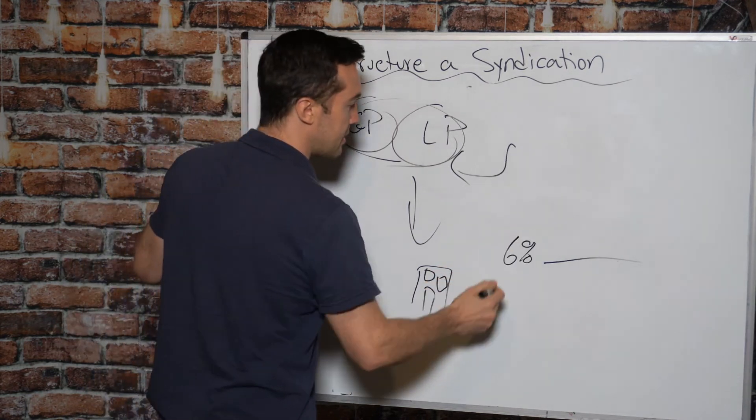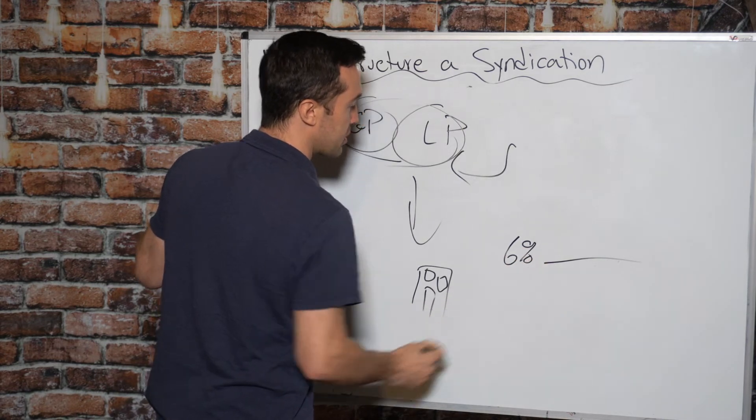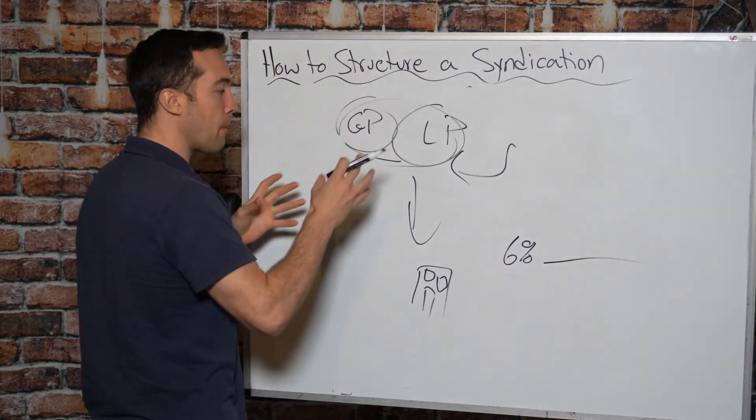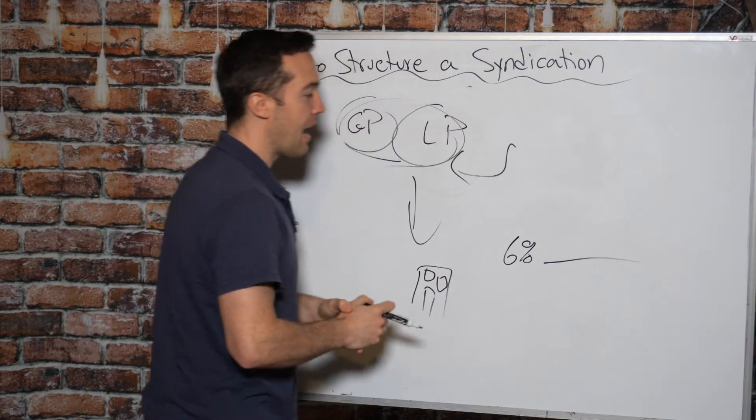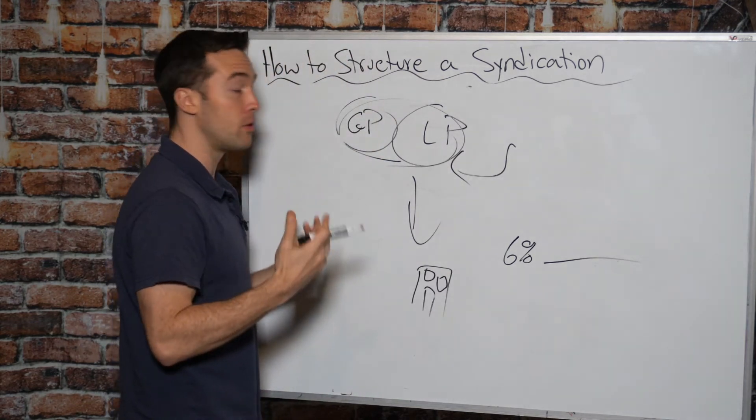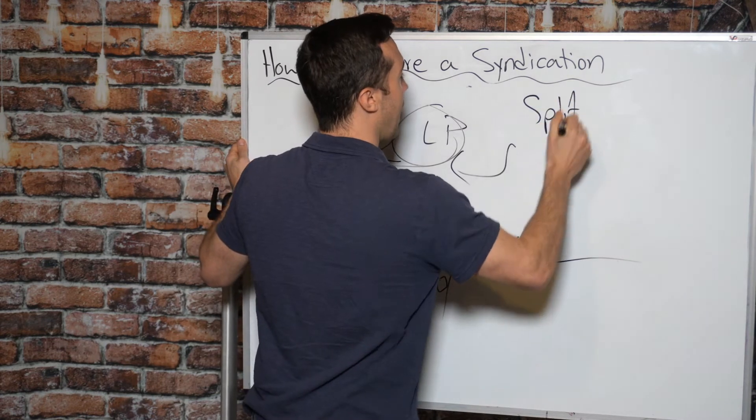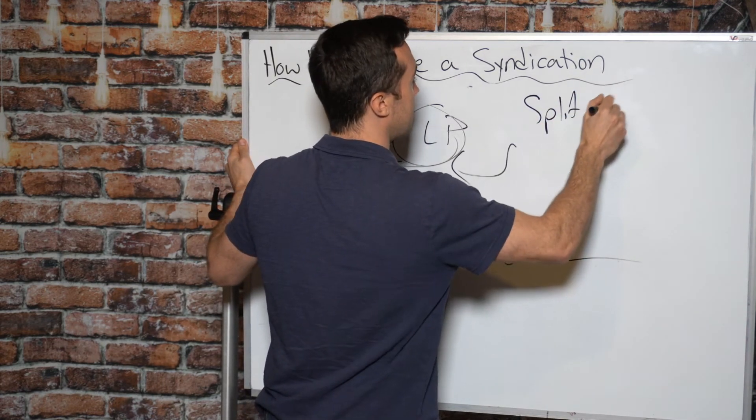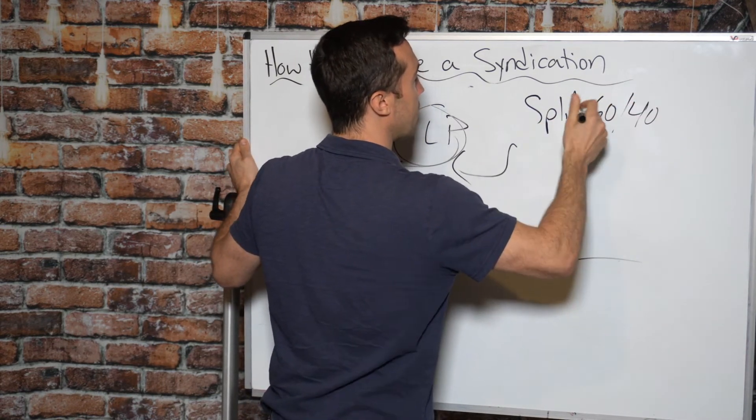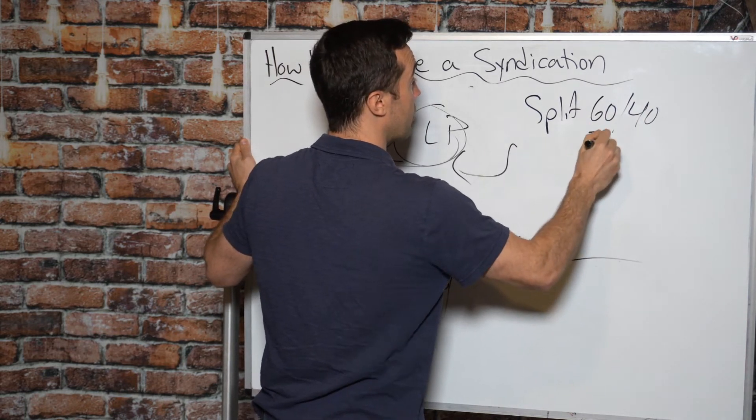also called a PREF return. You'll hear that thrown out a lot. So let's say this deal is performing under six percent.